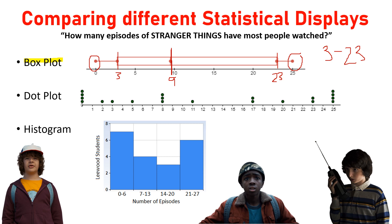Looking at the dot plot that Mike created, you can tell he surveyed twenty people because you can count each dot. If you count them all the way through, you'd see he surveyed twenty people. Besides that, there's not much else you can use this dot plot for unless you make calculations. You'd have to cross one out from each side to find the median of nine, and to find the mean you'd still have to do calculations. But the best thing about the dot plot is that you can actually see how many people he surveyed.